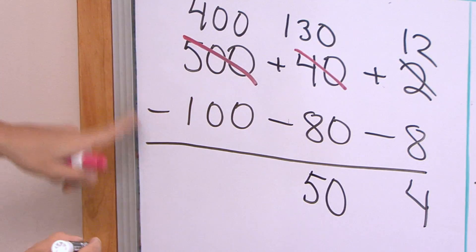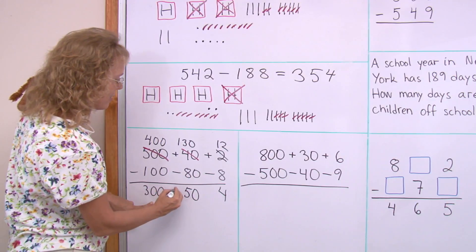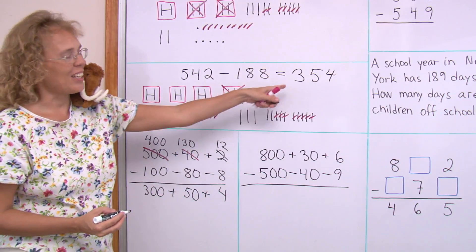And then four hundred minus one hundred is three hundred. So we get three hundred and fifty and four, just like here.